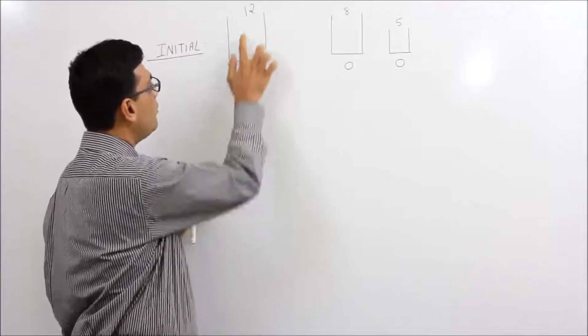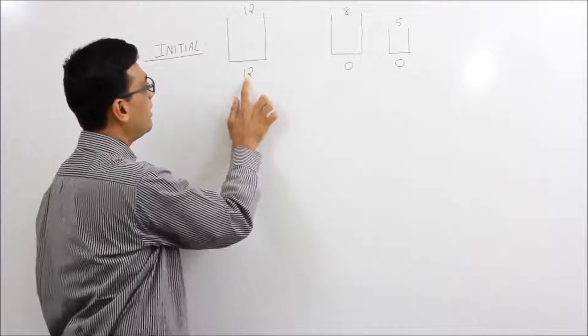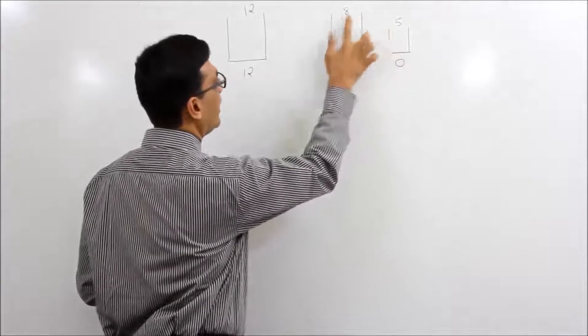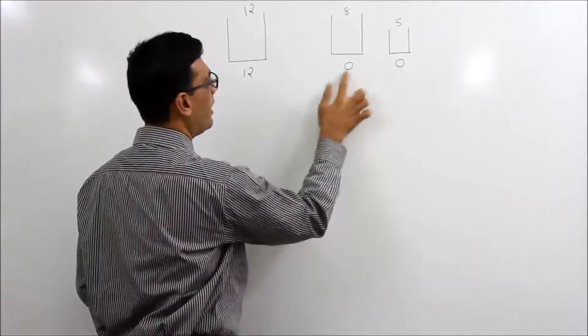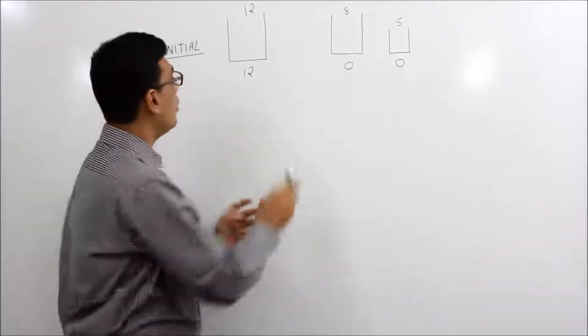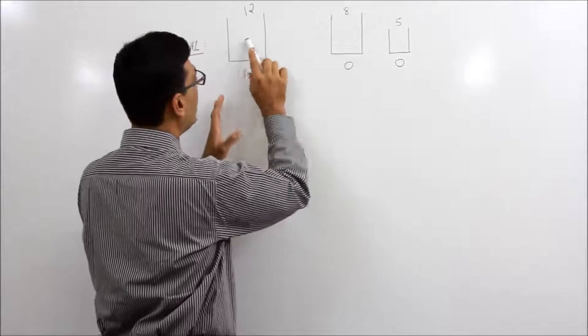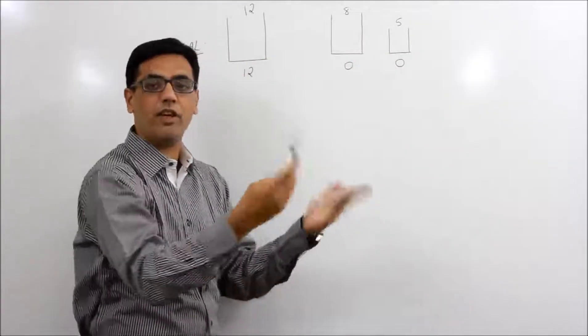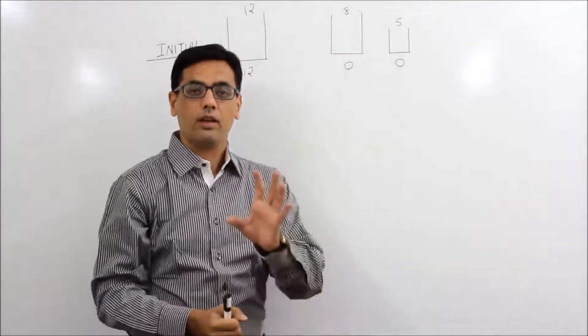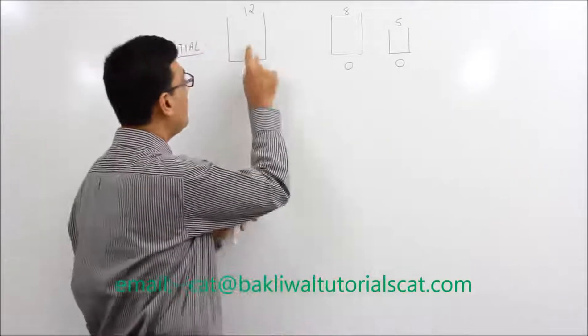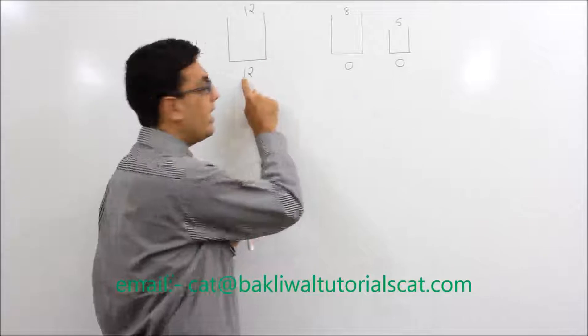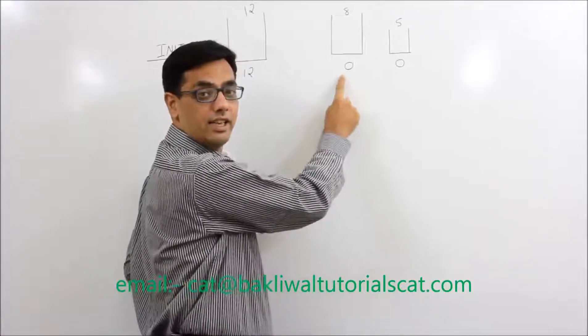So the question is: there is a 12 litre jar which is fully filled, there are 2 jars of 8 litre and 5 litre capacity but they are empty. You have to put this 12 litre in these jars whichever way you want. The only thing is, at the end of the operations I should get 6 litre in the first jar and 6 litre in the second jar.